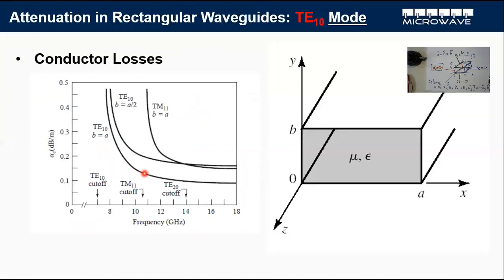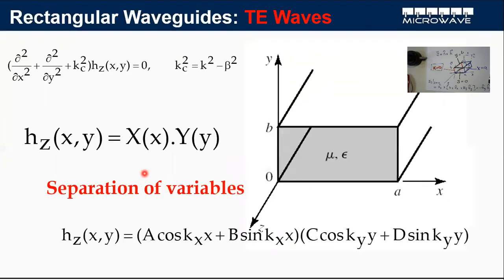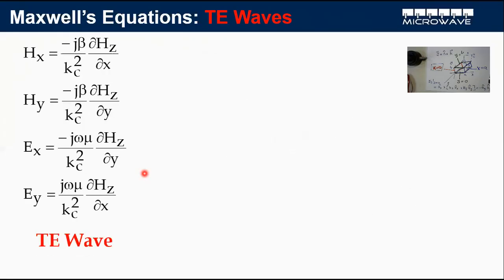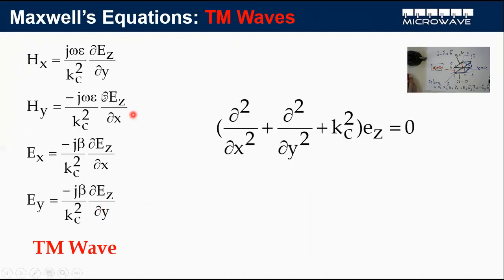The same approach applies to the TM mode. The only difference is that instead of solving the wave equation for H_z, you solve it for E_z and then determine the other four transverse components. It is a totally symmetric and analogous solution. Students are invited to derive the TM mode independently, substituting E_z in place of H_z and following the same procedure.